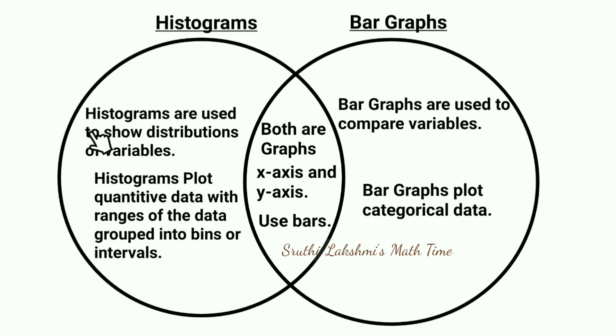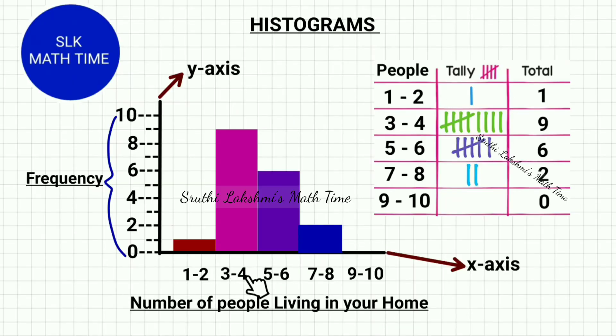So histograms are used to show distributions of variables while bar graphs are used to compare variables. A histogram plots quantitative data with the ranges of the data grouped into bins or intervals while bar graphs plot categorical data. So what they mean here by histograms plotting quantitative data with ranges of the data grouped into bins or intervals, they are basically meaning the ranges.